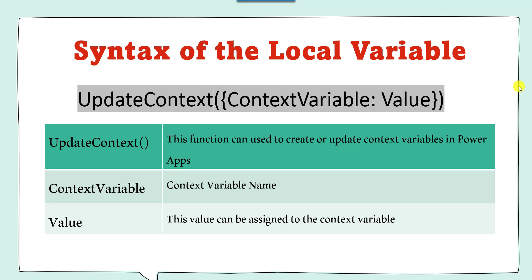Now we will discuss the syntax of the local variable, or updateContext variable. We can use the updateContext function to create or update context variables in PowerApps. The context variable name is provided, and a value is assigned to that context variable.